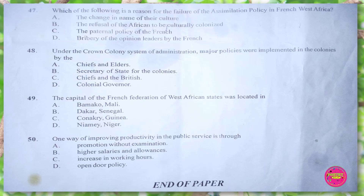Question 48. Under the Crown Colonies System of Administration, major policies were implemented in the colonies by: A. chiefs and elders, B. secretary of state for the colonies, C. chiefs and the British, D. colonial governor. The correct answer is D. colonial governor.